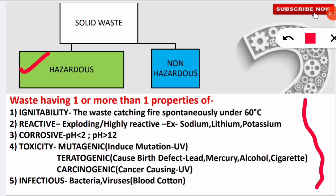The first property is ignitability — waste that catches fire spontaneously under 60 degrees Celsius. The second property is reactivity — when the waste has explosive reactivity or is highly reactive; for example, waste containing sodium, lithium, or potassium content is called highly reactive waste. The third property is corrosiveness — solid waste having a pH less than 2 (highly acidic) or a pH greater than 12 (highly alkaline) is called corrosive waste.